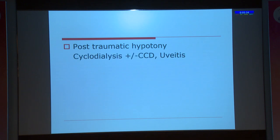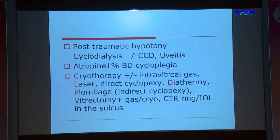Post-traumatic hypotony can be due to a cyclodialysis cleft, a ciliochoroidal detachment, or uveitis. Atropine has been tried as first-line conservative management for up to nearly two months. Other described options include cryotherapy to the area of the cleft, intravitreal gas, vitrectomy, and plombage — which we did in our case. There is also a case report of a CTR ring being placed in the sulcus.